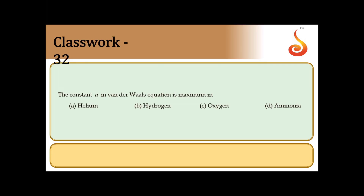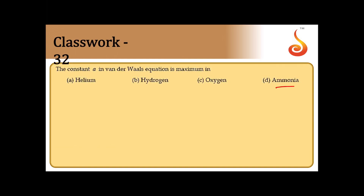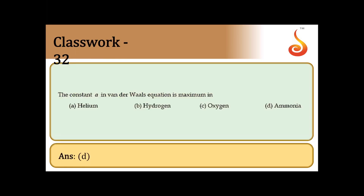Question 32: Van der Waals constant 'a' is maximum for which gas? The constant 'a' signifies attractive forces between molecules. Among helium, hydrogen, oxygen, and ammonia — ammonia has the strongest attractive forces due to hydrogen bonding. Answer is option D: ammonia.